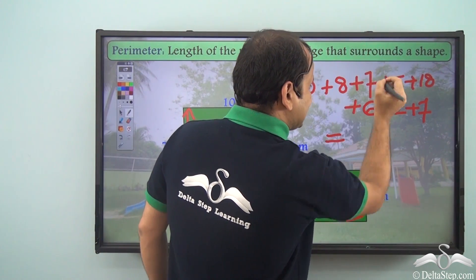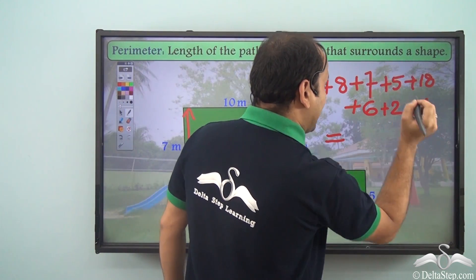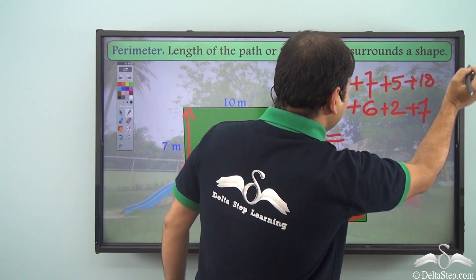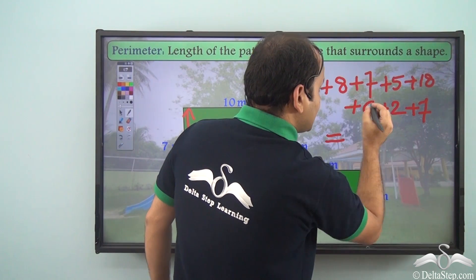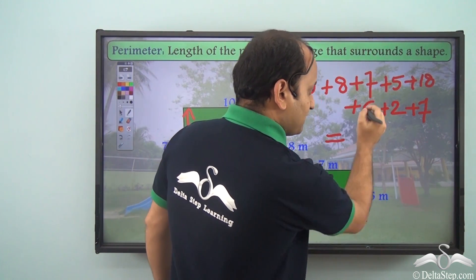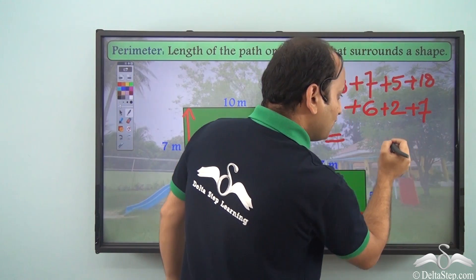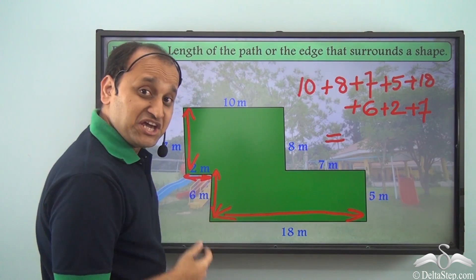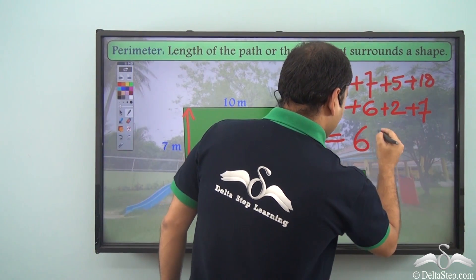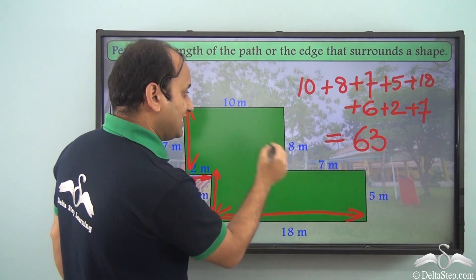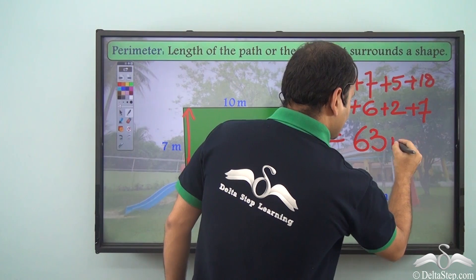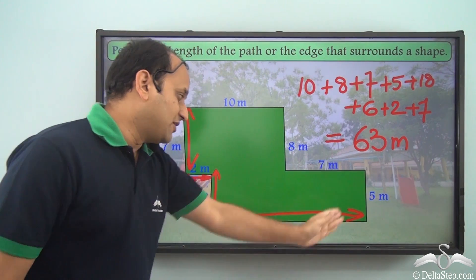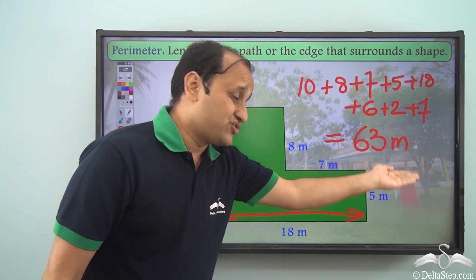Now when I add 7 to 18, what do I get? 25. And when I add 5 to 25, I get 30. 30 plus 18 will be 48. 48 plus 6 will be 54. And 54 plus 2 will be 56. And 56 plus 7 will be 63. So we have 63. And what exactly is the unit? Well, it's meters. So it's 63 meters. So what is the perimeter of this particular park? It's 63 meters. So this is how you calculate perimeter of any particular shape.